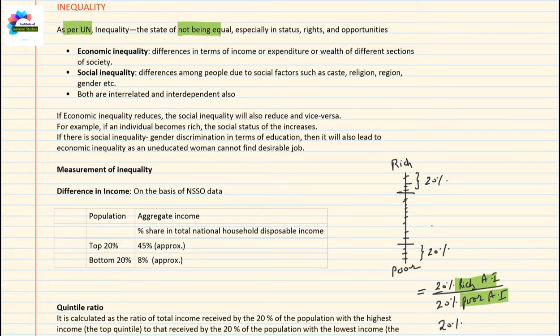There are also opportunities inequality. For example, urban people have more access to jobs than rural people. So there is an inequality between urban people and rural people.